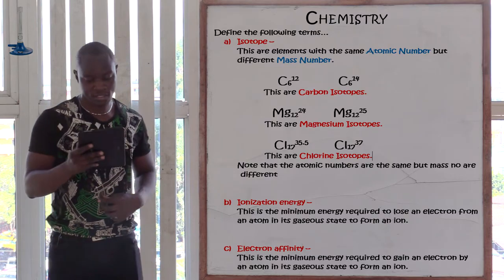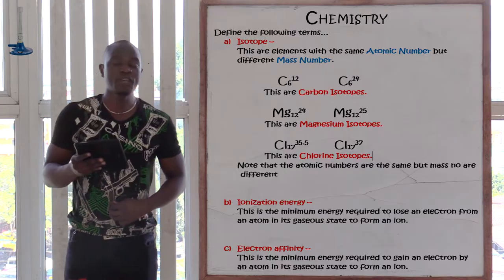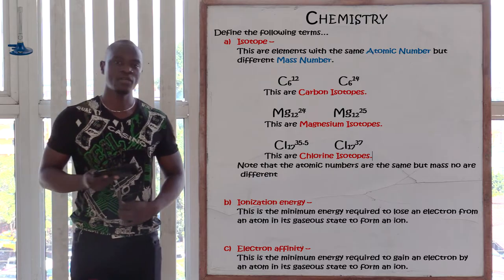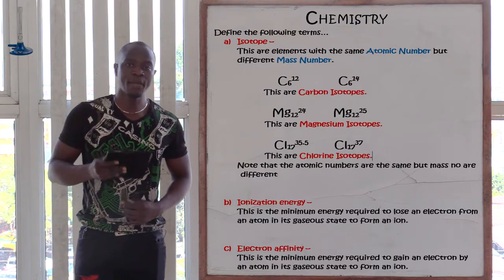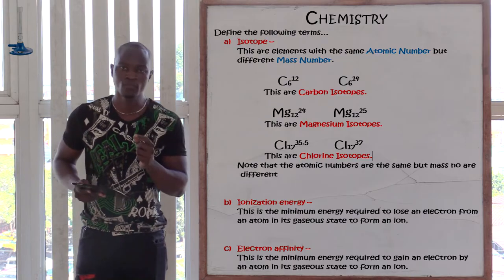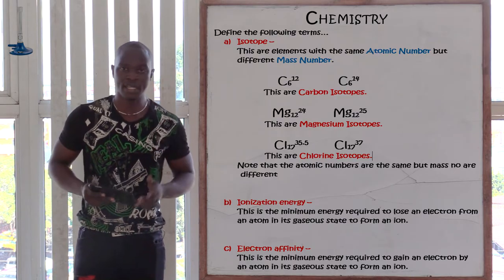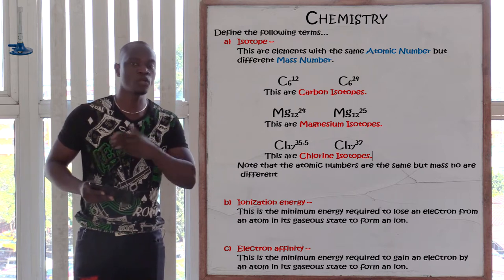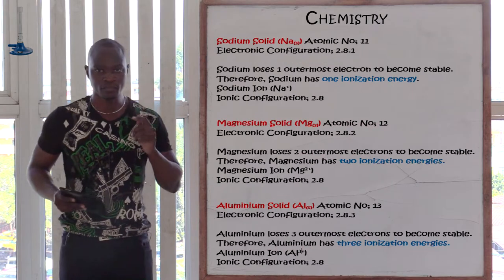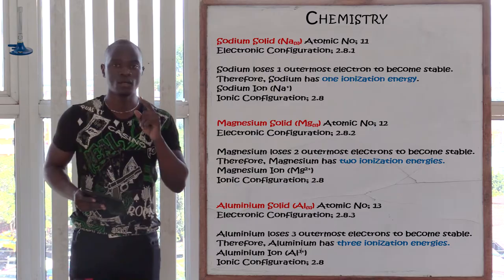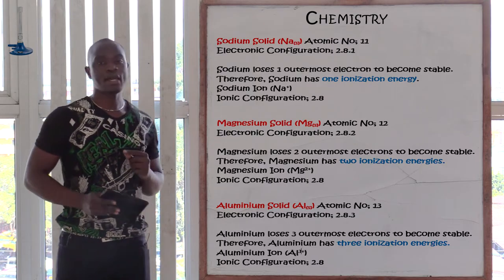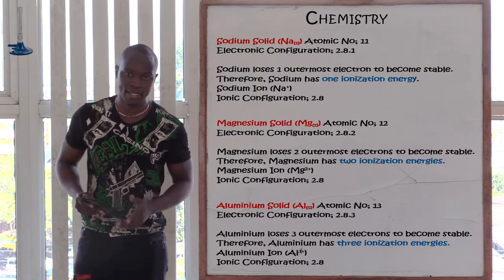The next one, letter B, is: define ionization energy. Ionization energy is the minimum energy required to remove an electron from the outermost energy level. For example, the outermost energy level of sodium has only one electron, so sodium is going to lose this one electron in order to become stable, giving a new configuration of 2,8. Since sodium loses one electron, sodium only has one ionization energy.